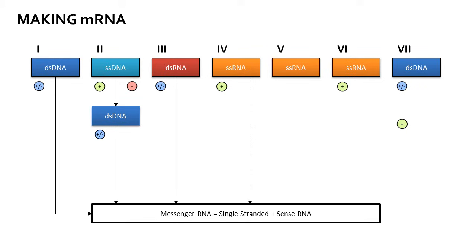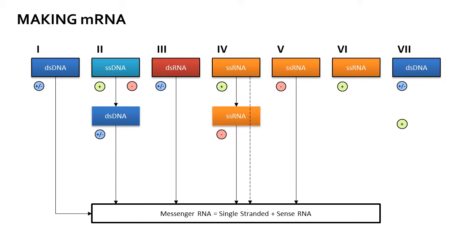Single-stranded positive sense RNA is already messenger RNA and can be used to make proteins right away. Alternatively, it can be copied into its negative sense to then produce more positive sense messenger RNA — this of course also requires an RNA-dependent RNA polymerase. Group 5 viruses function exactly like the post-conversion group 4 viruses and can produce the positive sense messenger RNA from the negative sense genomic RNA strand using an RNA-dependent RNA polymerase.